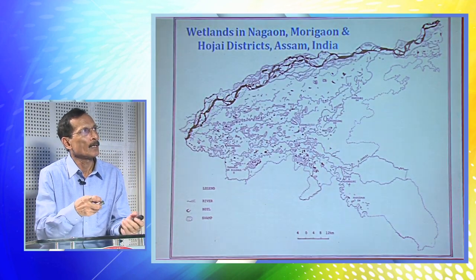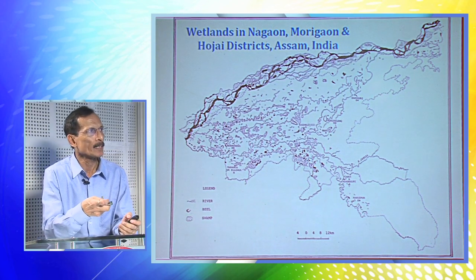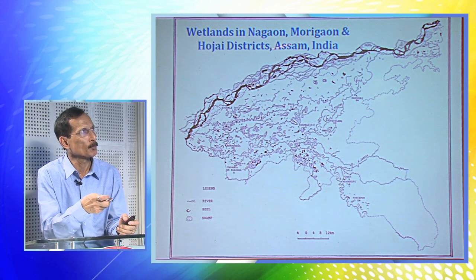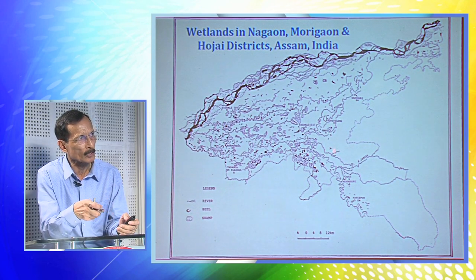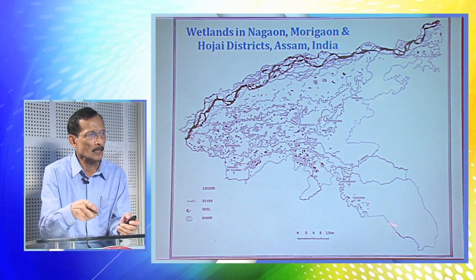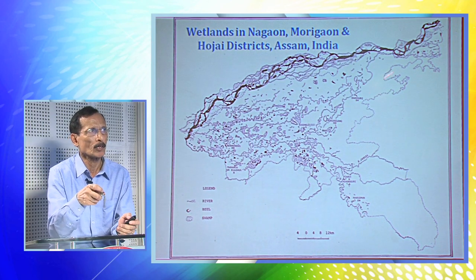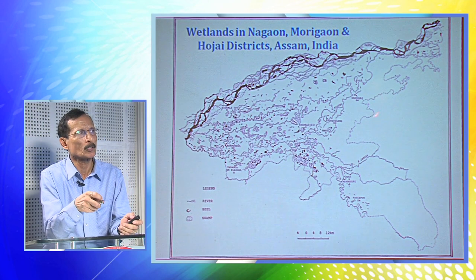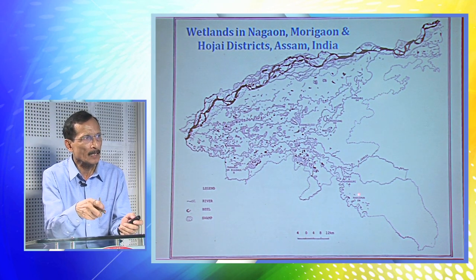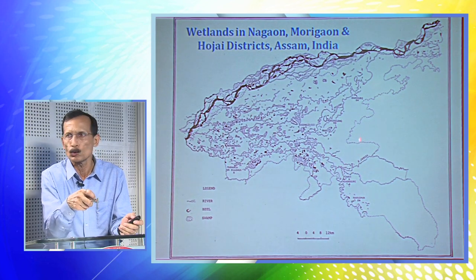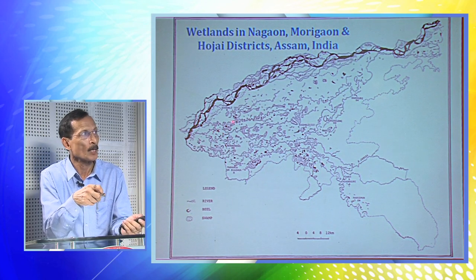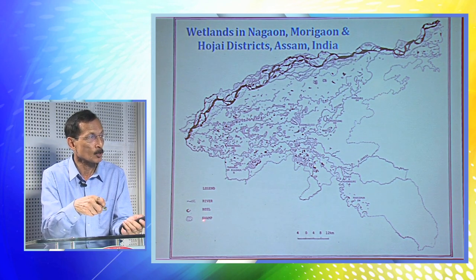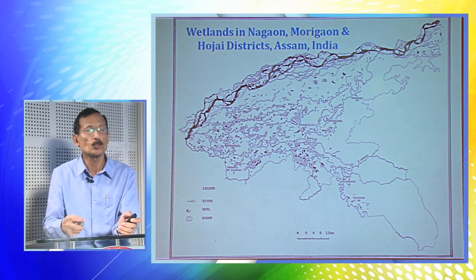The distribution pattern of wetlands shows a varied picture. For example, covering three districts — Morigaon, Hojai, and Nagaon — the number of wetlands in Hojai district is very few, as is the border area of Nagaon district, because they are close to the hilly area of Karbi Anglong district. But wetland conditions are much more pronounced in Morigaon district, where there are many rivers, Beels, and swampy areas. So the distribution pattern is not uniform throughout.